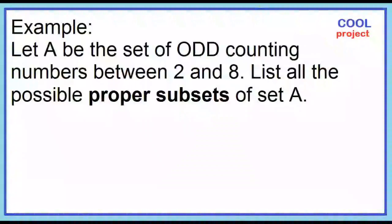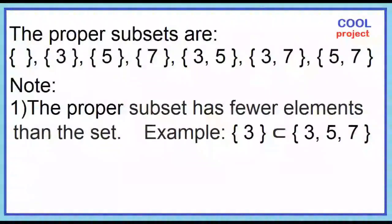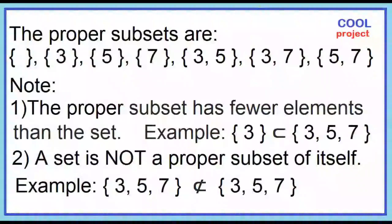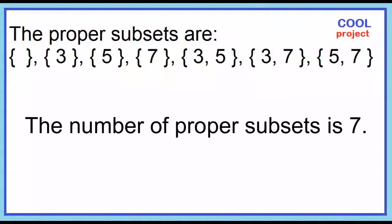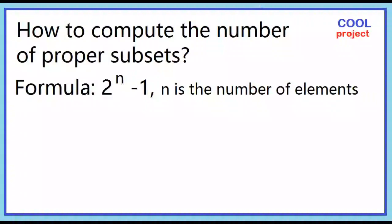Another example: Let A be the set of odd counting numbers between 2 and 8. List all the possible proper subsets of set A. Set A contains the odd numbers 3, 5, and 7. Note: the proper subset has fewer elements than the set, and the set is not a proper subset of itself. The number of proper subsets of set A is 7. The formula is 2 to the power of N minus 1, where N is the number of elements.